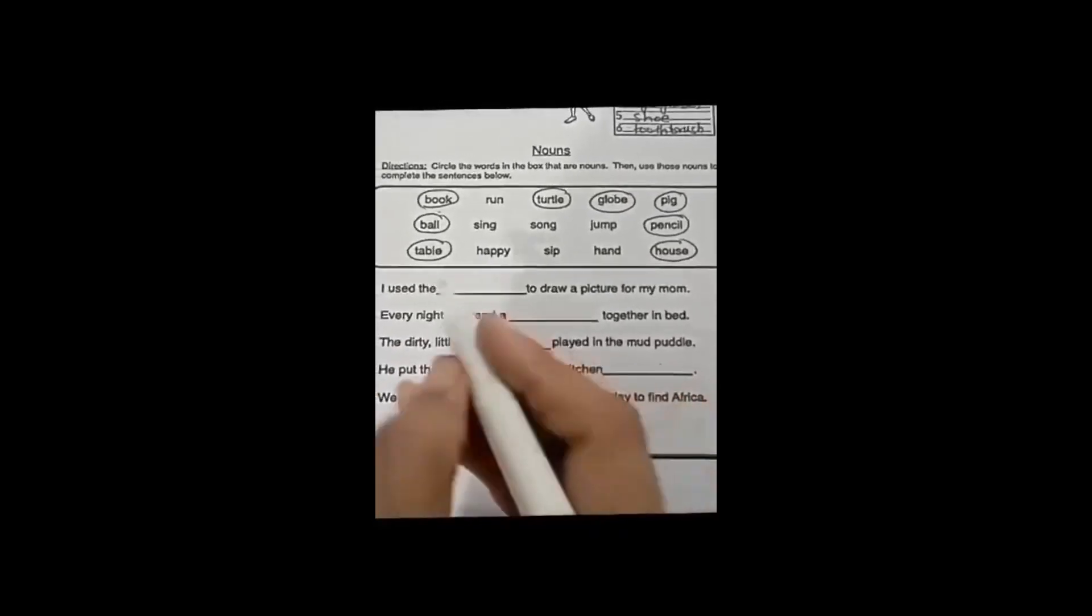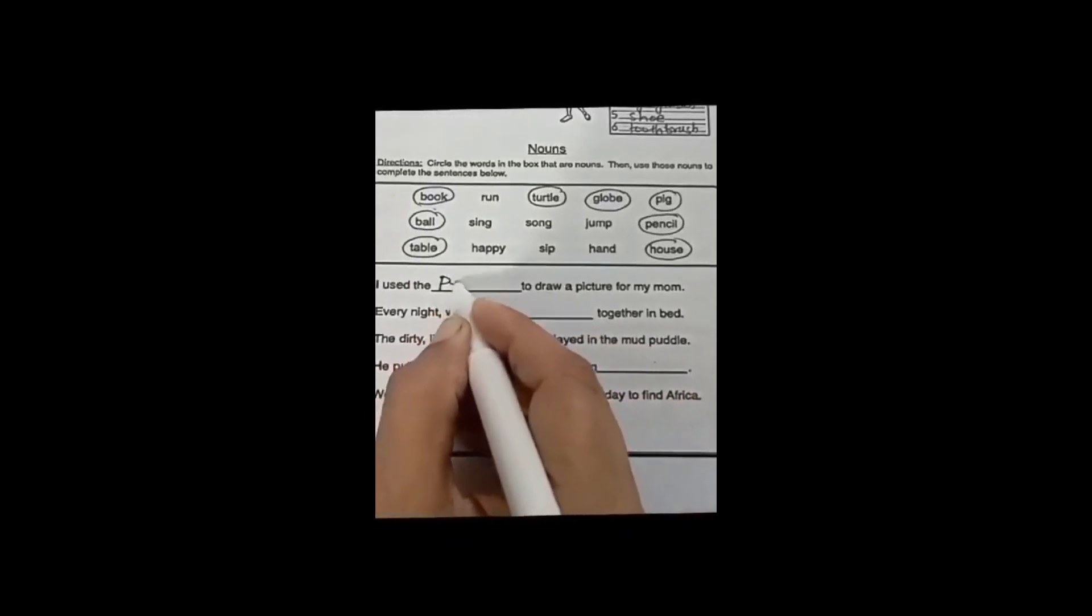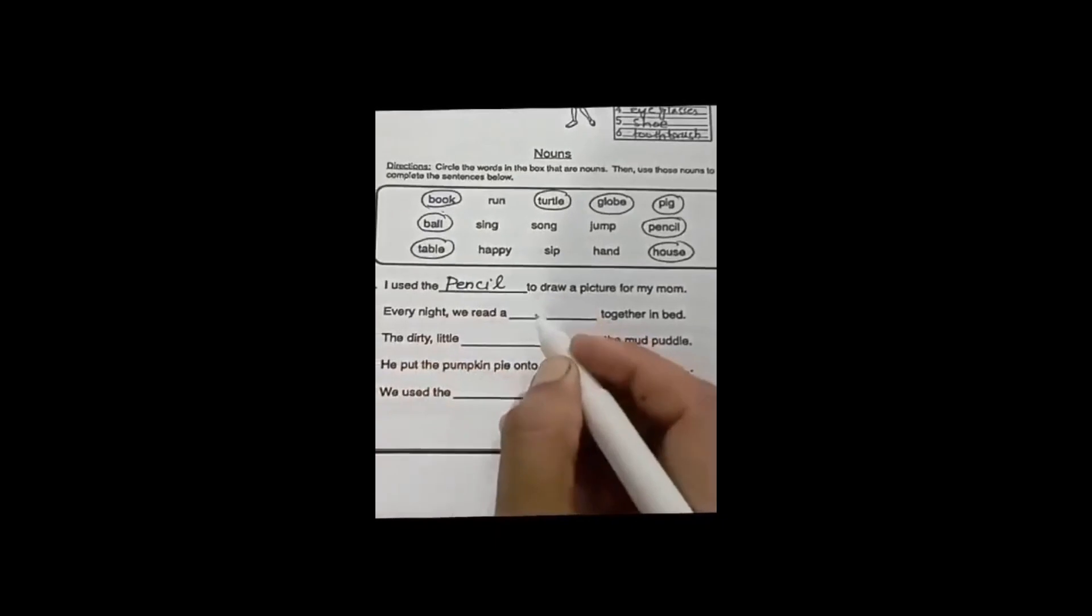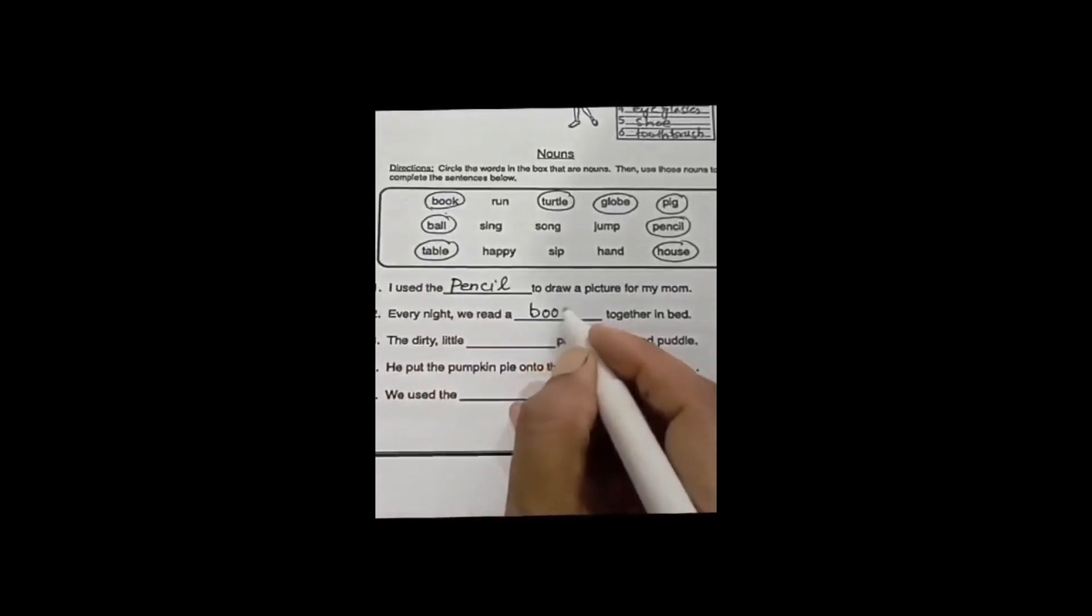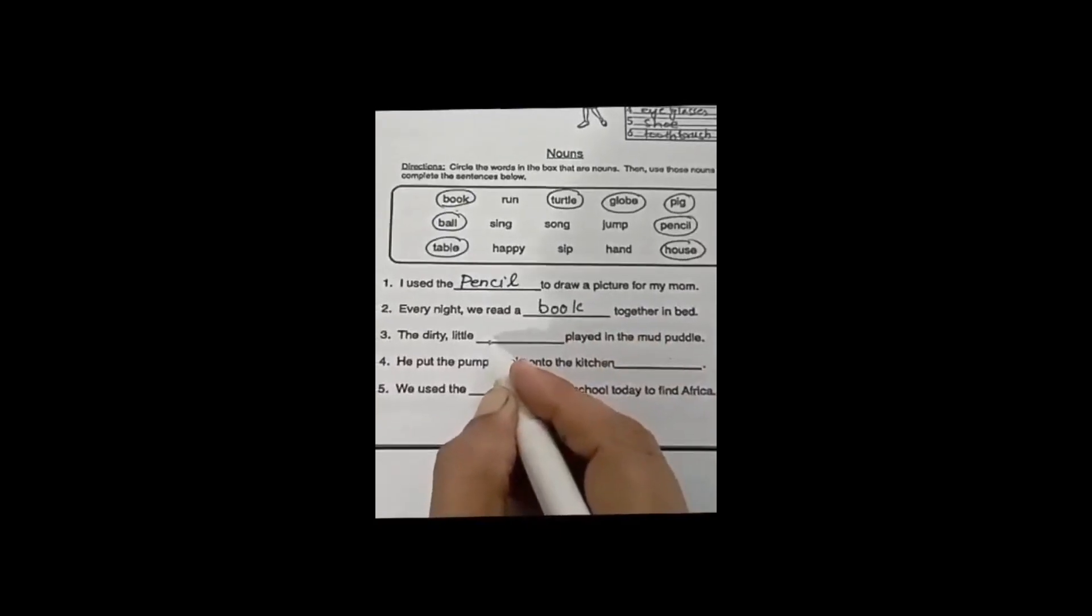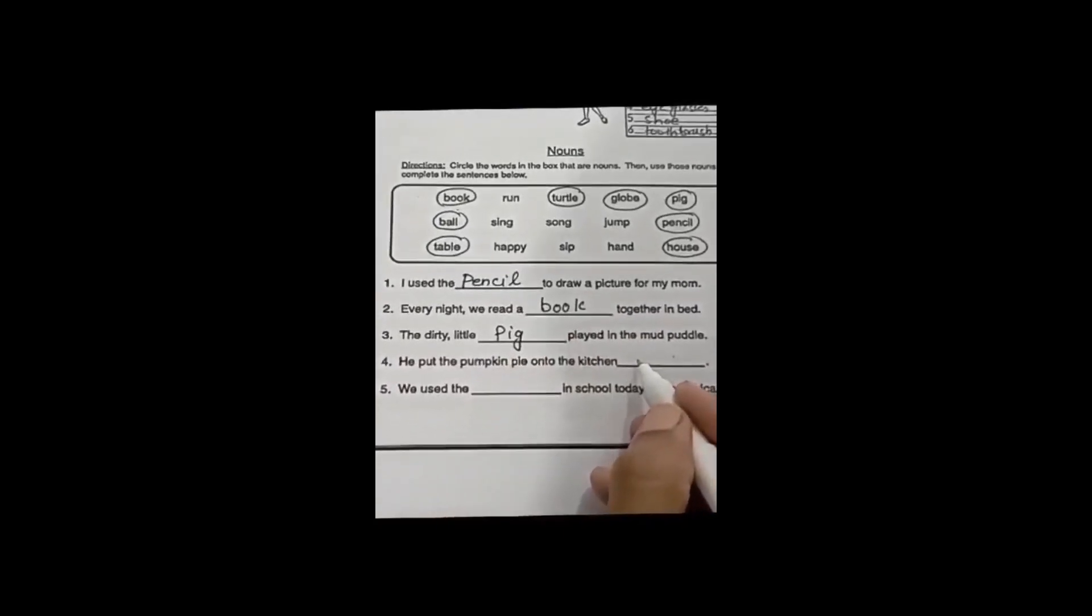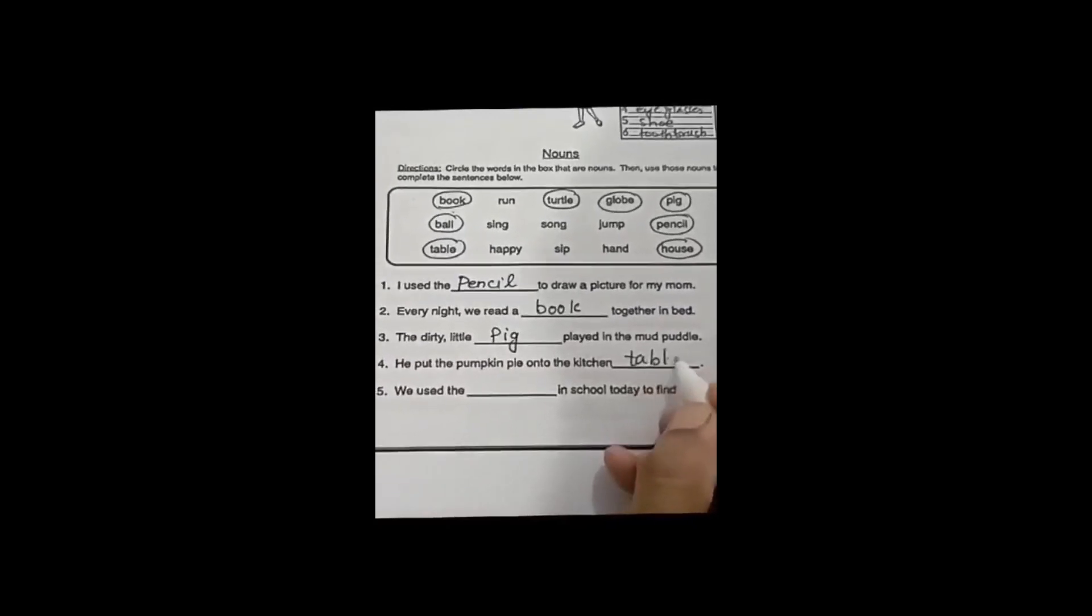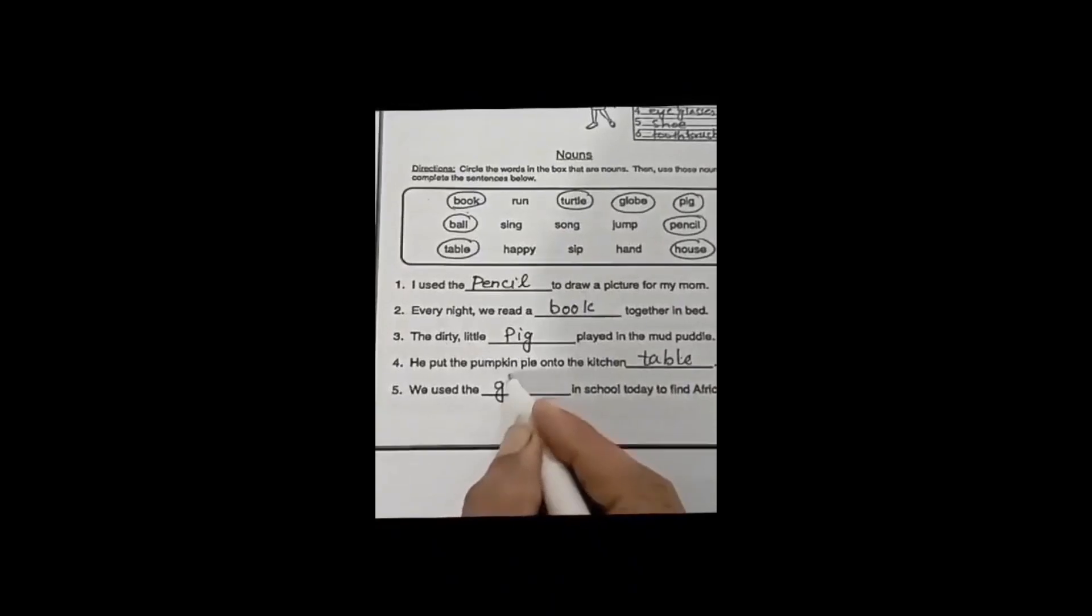Let's complete the blanks. I use the pencil to draw a picture for my mom. Every night we read a book together in bed. The dirty little pig played in the mud puddle. He put the pumpkin pie onto the kitchen table. We used the globe in school today to find Africa.